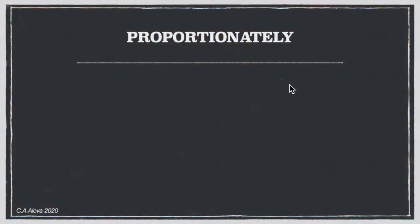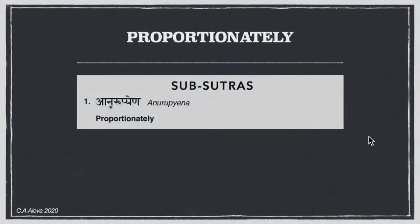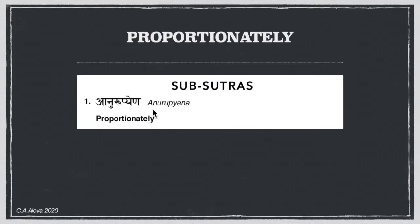Proportionately is one of the sutras in Vedic Mathematics. There are actually 16 main sutras, and after those 16 sutras, there are also 16 corollaries or sub-sutras that complement each sutra. The first sub-sutra is written in Sanskrit, pronounced roughly as Anurupyena. In English, it's 'proportionately.'